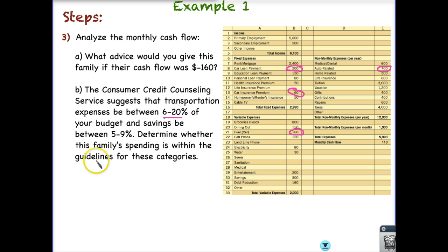So to figure out our transportation, what we'd want to do is we'd want to take all these expenses. So we have the 200, we have the 60, the 160, and the 700. And we'd want to add these all up. So I get 1120, total transportation. So how can I determine if that falls within an appropriate range, if that falls between 6 and 20 percent? Well, what I need to do is figure out what percent this 1120 is of my total expenses. And I know my total expenses. They're 5,990 right here. So in order to find percent, I always take the part divided by the whole. So I have 1,120 divided by the whole, which is 5,990.